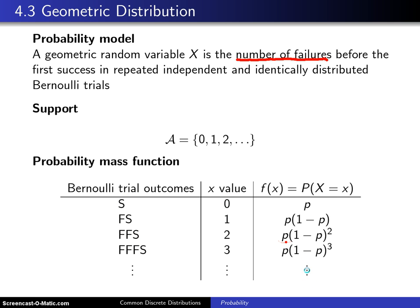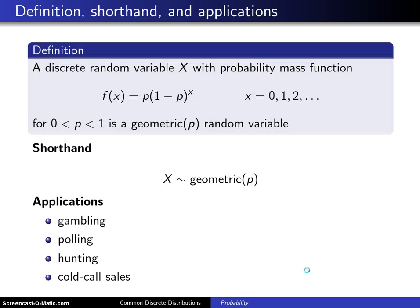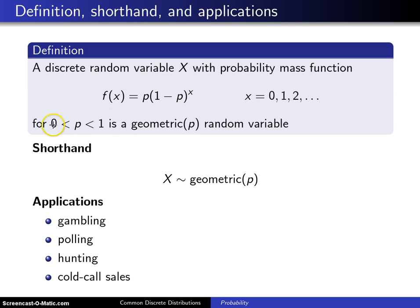When you generalize that pattern, you come up with a probability mass function given in this definition. A discrete random variable x has probability mass function f(x) = p times (1 minus p) raised to the x power, for x = 0, 1, 2, ..., and that's for some p value between 0 and 1. That's a geometric p random variable.